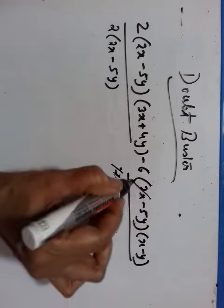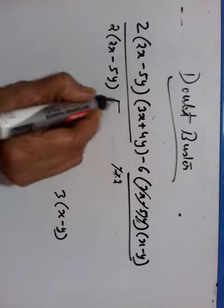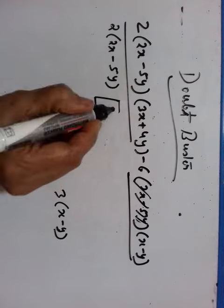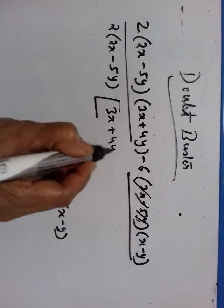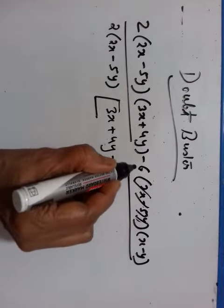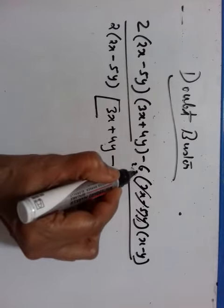So 2 and 2x minus 5y goes out. So what remains inside is 3x plus 4y minus here 2 into 3 was there. 2 has gone out, so 3 remains.